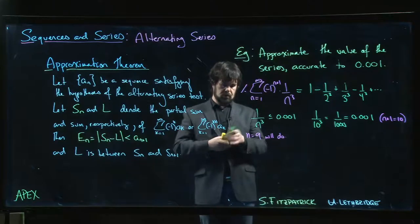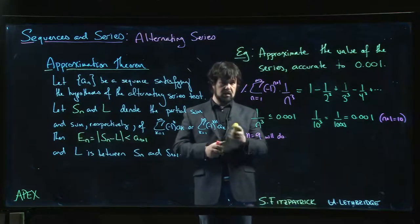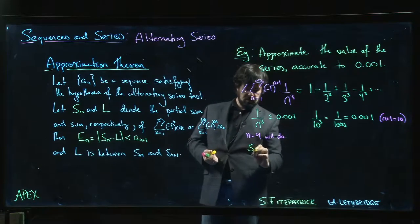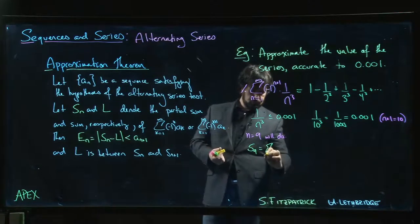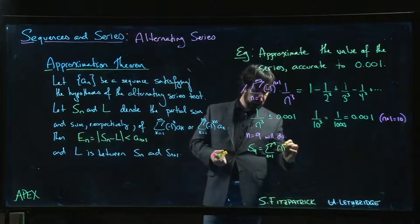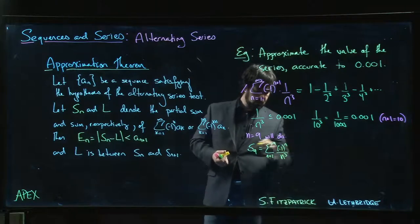So we can calculate s9. I'm not going to do it because I don't have a calculator in my pocket, but s9 will be the sum, say n going from 1 to 9, minus 1 to the n over n cubed.